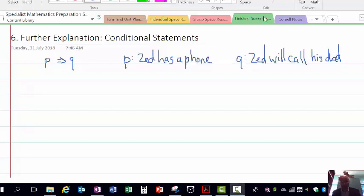From an earlier video, you may have seen P, the statement Zed has a phone, and Q, Zed will call his dad. We looked at that quickly, and I said we would have a closer explanation of the results of P implies Q.